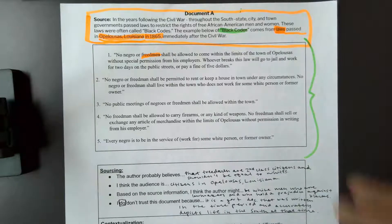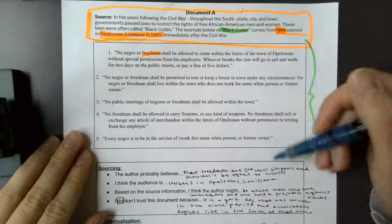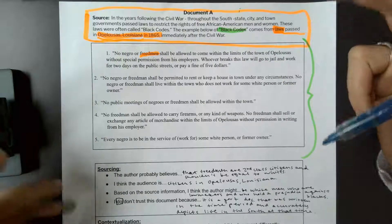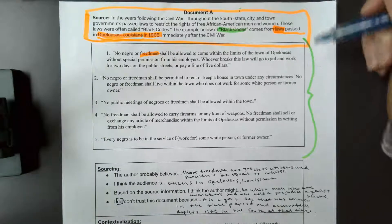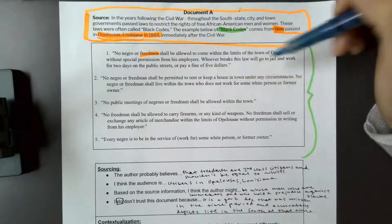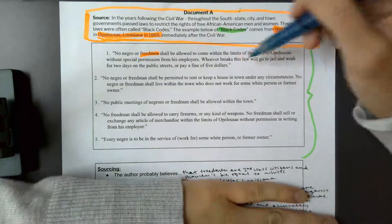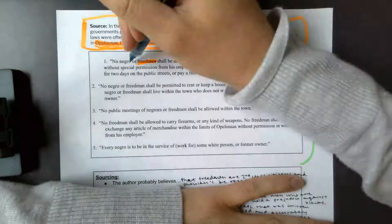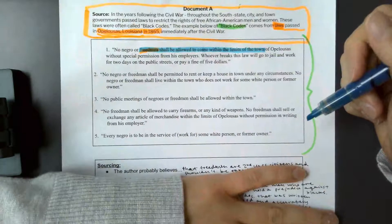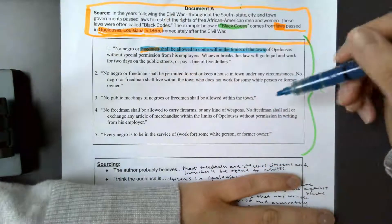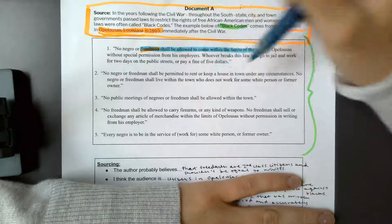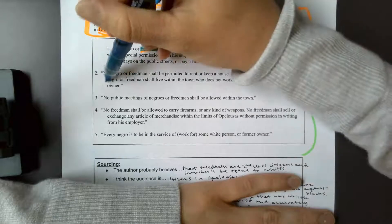All right, so our first question: what claims does the author make? Basically they make five different claims in here because they're stating five different laws that they're trying to put in place. Can't come within town limits without special permission from employers. So this one, the claim is no freedman are not allowed in the town basically without permission from employers. The second statement, or the second claim, would be no freedman shall live within the town.